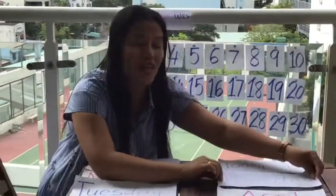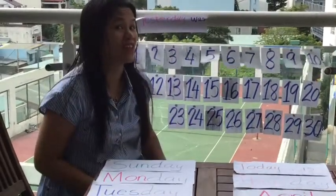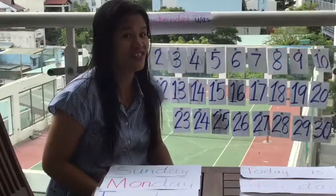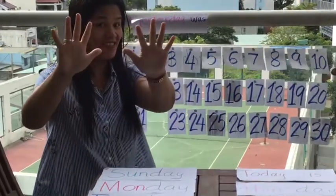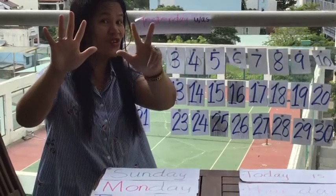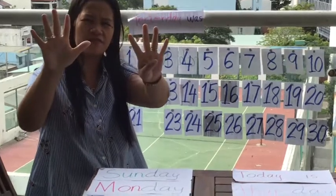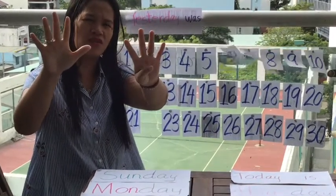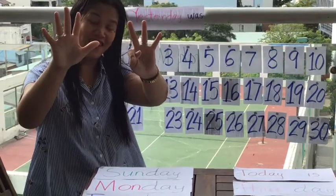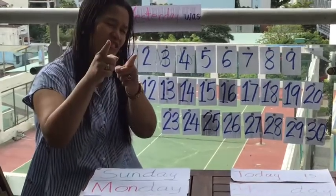So five and three make eight. What else can you make eight? Five and three make eight. What else? Four and four make eight. Very good. Ten take away two makes eight. Very good. What about if you have nine? What will you do? Take away one. Nine take away one makes eight. Awesome.